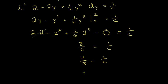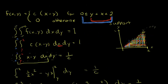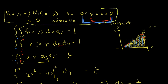So we have 4 over 3 equals 1 over C. Flipping both sides gives C equals 3/4. This function F is a PDF when C equals 3 fourths — so instead of C, we now write 3/4 and F is a valid PDF.